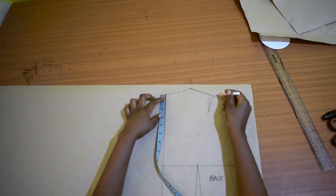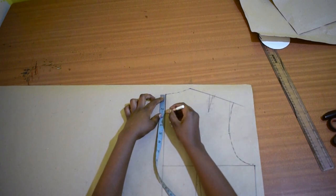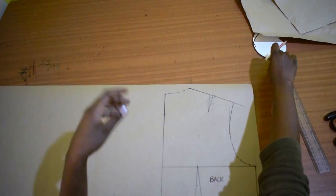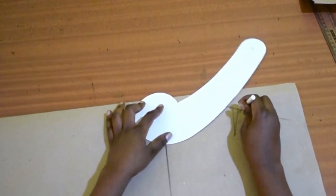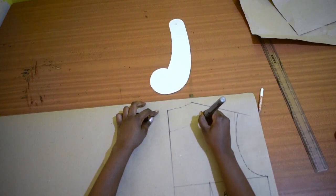Then go down 2 1⁄2 inches. Then I'll join this with a curve. The new neckline.